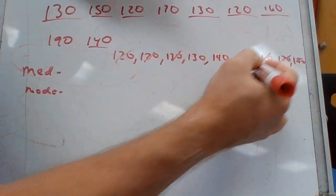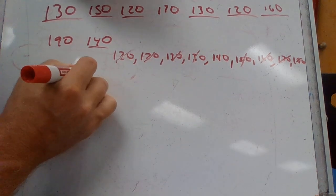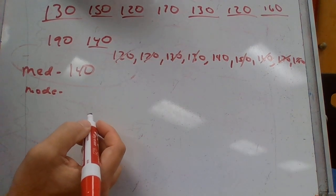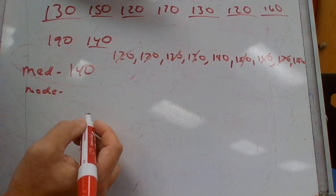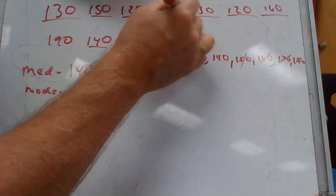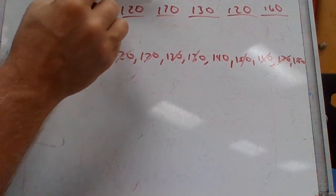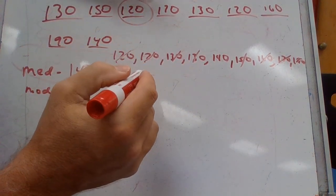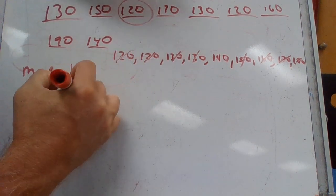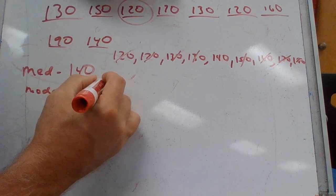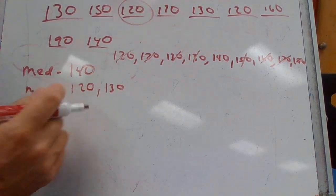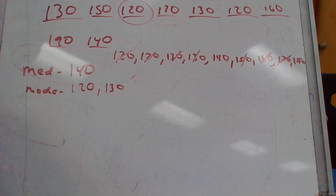Now this is the mode. It's the number that occurs the most. 120 and 130 both occur two times. Technically one of them occurs the most, but we're going to say the mode in this instance is 120 and 130. We will go back over lesson 6 today. Make sure you bring that math folder.